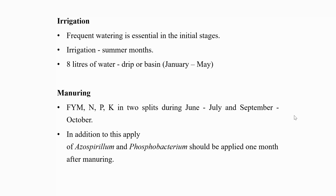One-year-old plants can be applied with farm yard manure, 15 kg nitrogen 20 g, phosphorus 20 g, and potassium 60 g in two splits during June to July and September to October. Every year the dosage is correspondingly increased, and a bearing tree of 7 years old may be applied with farm yard manure 50 kg, nitrogen 300 g, phosphorus 300 g, and potassium 960 g. In addition, apply 15 g each of Azospirillum and Phosphobacterium one month after manuring.